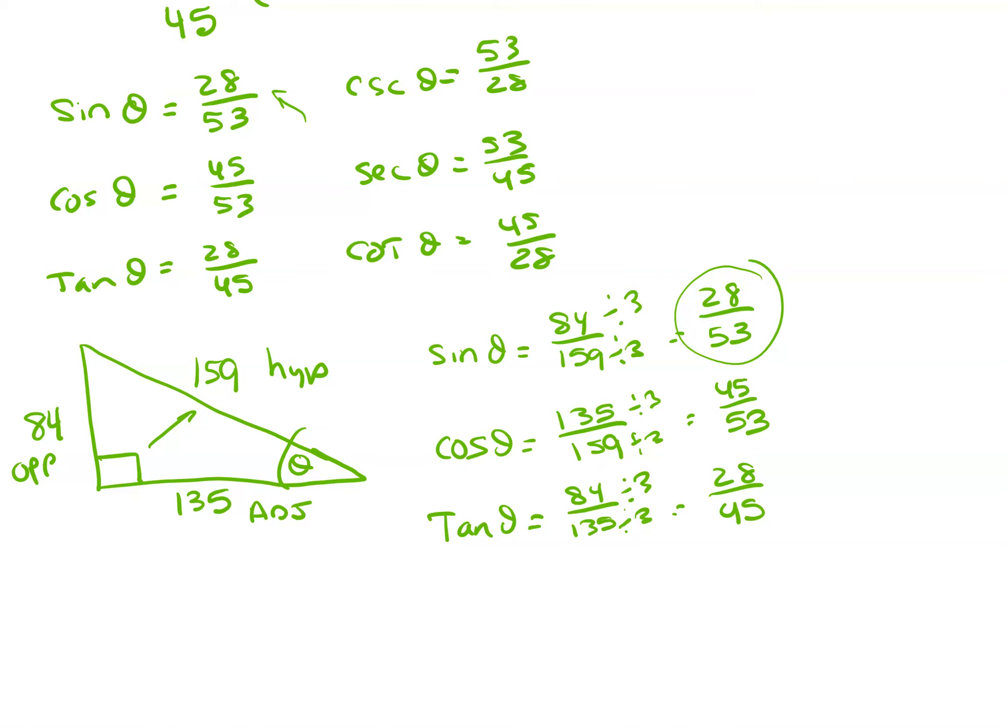Cosine is adjacent over hypotenuse. So it's 135 over 159. They both divide by 3 here as well, so 45 over 53. And tangent, opposite over adjacent, so 84 over 135. And these reduce as well by 3, so 28 over 45. And for cosecant, secant, and cotangent, again, you just flip these around.